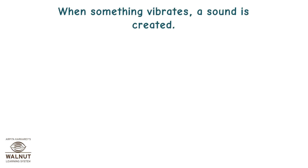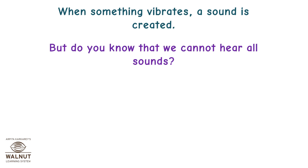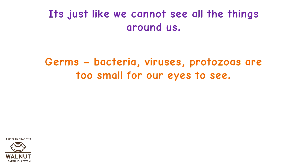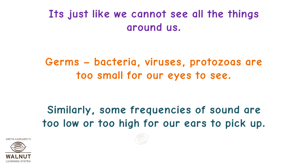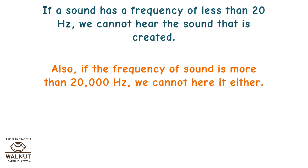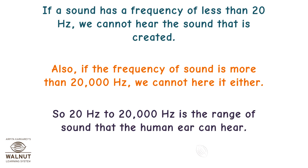When something vibrates, a sound is created. But we cannot hear all sounds — just like we cannot see all things around us, such as germs, bacteria, viruses, and protozoa which are too small for our eyes to see. Similarly, some frequencies of sound are too low or too high for our ears to pick up. If a sound has a frequency of less than 20 Hz, we cannot hear it. Also, if the frequency of sound is more than 20,000 Hz, we cannot hear it either. So, 20 Hz to 20,000 Hz is the range of sound that the human ear can hear.